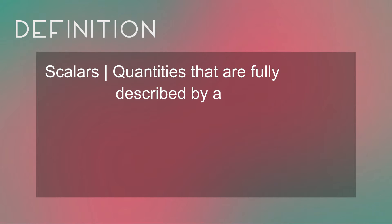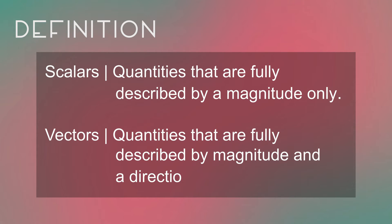Scalars are quantities that are fully described by a magnitude only. Vectors are quantities that are fully described by a magnitude and a direction.